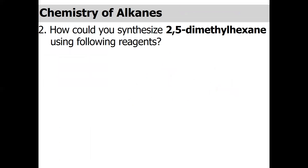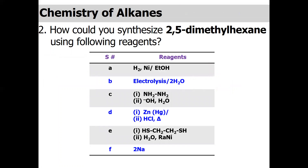Now let us move to question number two. I asked how we could synthesize 2,5-dimethylhexane using the following reagents: A) hydrogen and nickel in ethanol, B) electrolysis, C) hydrazine in basic conditions, D) zinc in acidic conditions, E) a sulfur-containing group with water and Raney nickel, and F) sodium metal. We have to choose the starting compound for each reagent to synthesize 2,5-dimethylhexane.